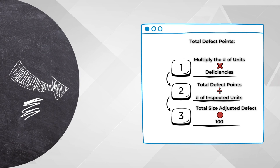After you get the total defect points, you will divide them by however many units were inspected. This result is called the total size-adjusted defect.